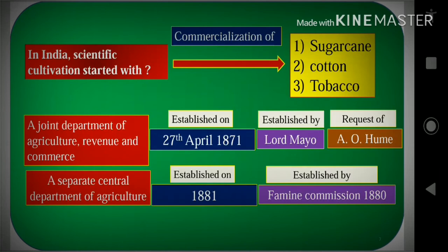We will know how the Department of Agriculture started. First, a Joint Department of Agriculture, Revenue, and Commerce was established on 27 April 1871, which was established by Lord Mayo with the request of A.O. Hume. A.O. Hume requested Lord Mayo to establish this Joint Department of Agriculture, Revenue, and Commerce.